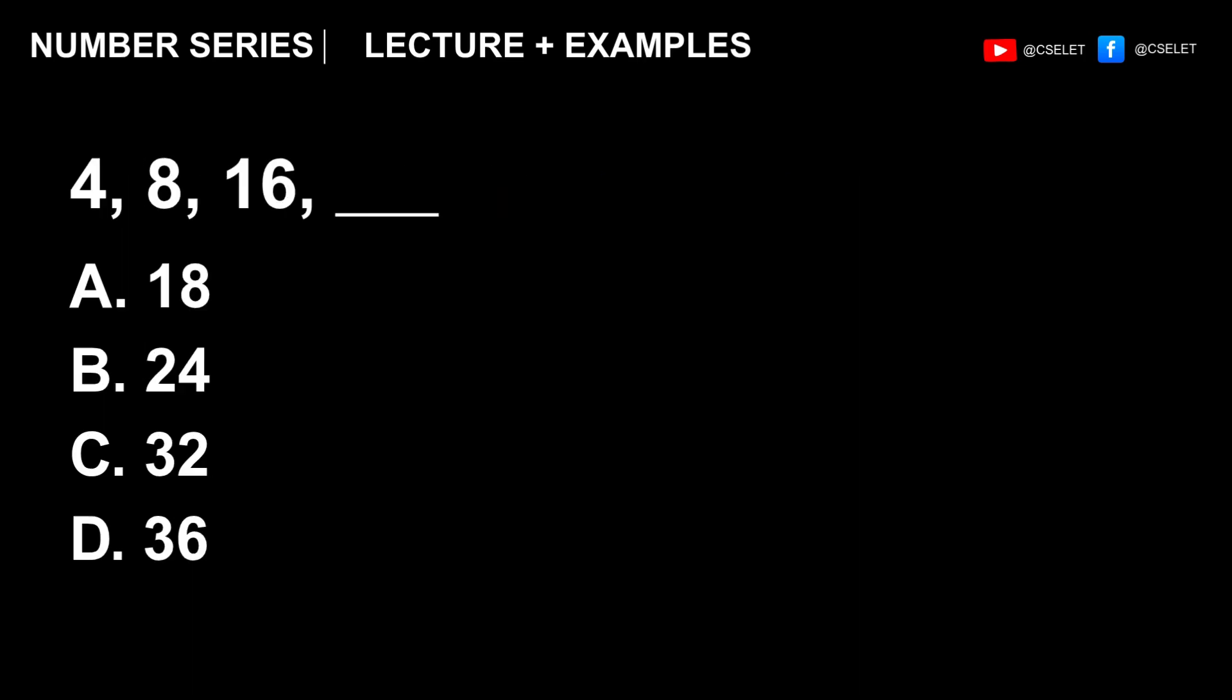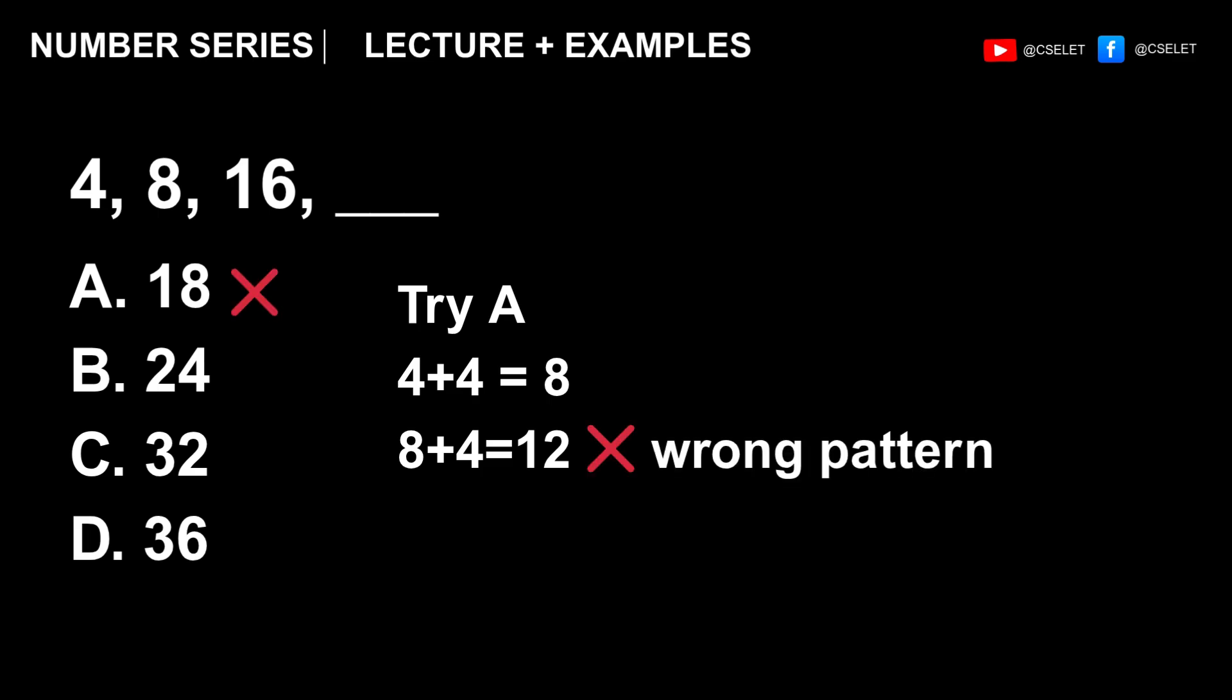For example, this example: 4, 8, 16. The numbers are ascending, but the gaps don't seem that large. So, do you need to add or multiply? Let's try addition first. And let's try letter A, which is 18. So, 4 plus 4 is 8, okay. 8 plus 4 is 12, but we have 16 here. The pattern is already wrong. So eliminate that and let's proceed to letter B.